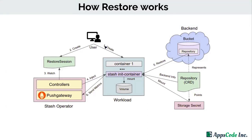Now let's see how restore works. To restore data, the user has to create a restore session. The restore session contains information about where the user wants to restore and what is the source of the backup data. The Stash operator watches for restore sessions. When it sees a restore session, it immediately injects a Stash init container into the target workload. The target workload gets restarted with the init container, and the init container restores the data from the backend. In the next video we will see a demo for Stash workload backup.